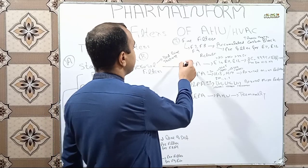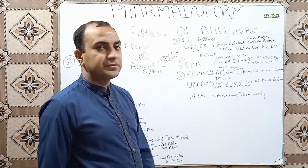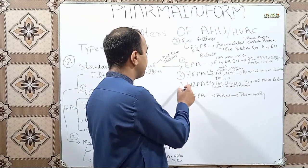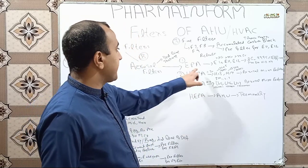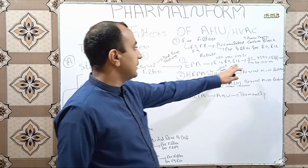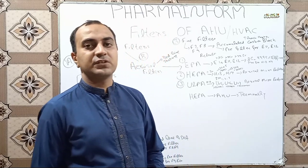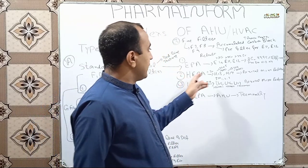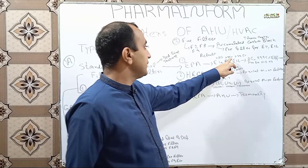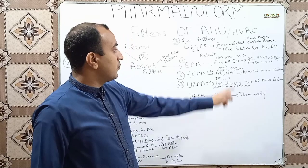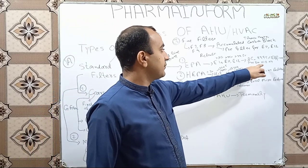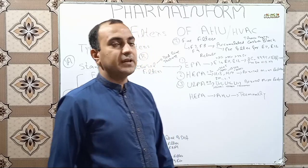Aerosol filters are classified into three classes: EPA (Efficient Particulate Air) filters, HEPA (High Efficiency Particulate Air) filters, and ULPA (Ultra Low Particulate Air) filters. EPA filters are further classified into E10, E11, and E12 filters. Filters with 85 to 99.5 percent efficiency are known as EPA filters. E10 has retention of more than 85 percent, E11 more than 95 percent, and E12 more than 99.5 percent. EPA filters are used as pre-filters for H13 and H14.